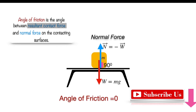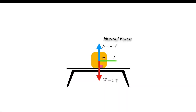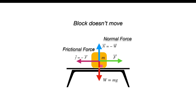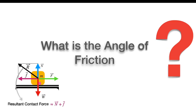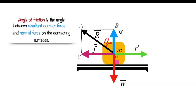Now let's apply a horizontal force F on the block, and the block doesn't move. This is because an equal and opposite static friction force between the block and table surfaces opposes the applied force. Friction force is also a contact force. So now we have two contact forces: the normal force and the frictional force. The resultant contact force R is the vector sum of these two forces. So what is the angle of friction in this case?